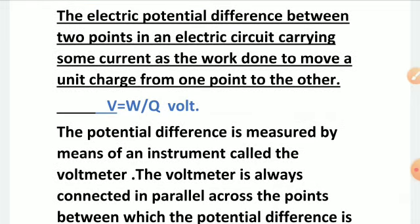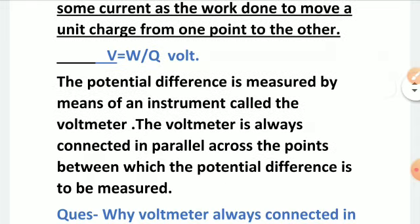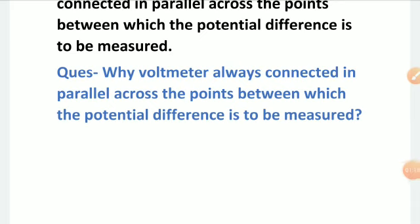Potential difference is measured by an instrument called the voltmeter. The voltmeter is always connected in parallel across the points between which the potential difference is to be measured. So the question arises: why is the voltmeter always connected in parallel across those points?